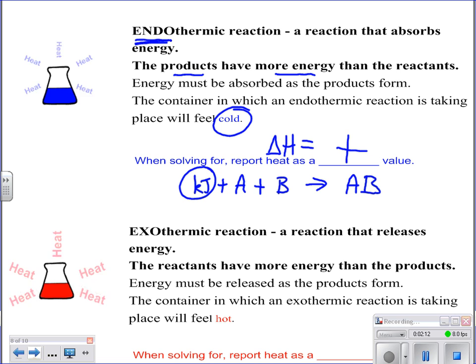We're going to see the opposite for exothermic. Remember, exothermic means that energy is exiting. So because it's exiting, it's leaving, the reactants are going to have more energy than your products. And so that means that when you touch that beaker or flask, it's going to feel hot to the touch.